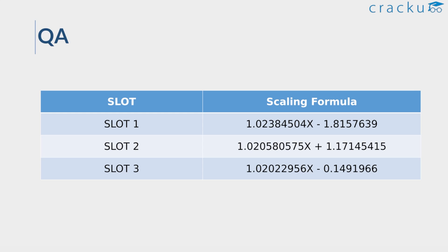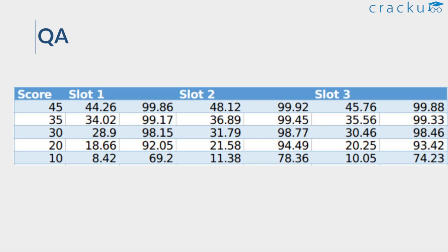Finally, let's look at the Quant section. These are the scaling formulas used for each slot. The scaling did not differ by much across slots. For the Slot 2 Quant section, which was tougher, a raw score of 45 in Slot 1 got scaled down to 44.26, whereas in Slot 2 it was scaled up to 48.12, and in Slot 3 it was more or less the same at 45.76.